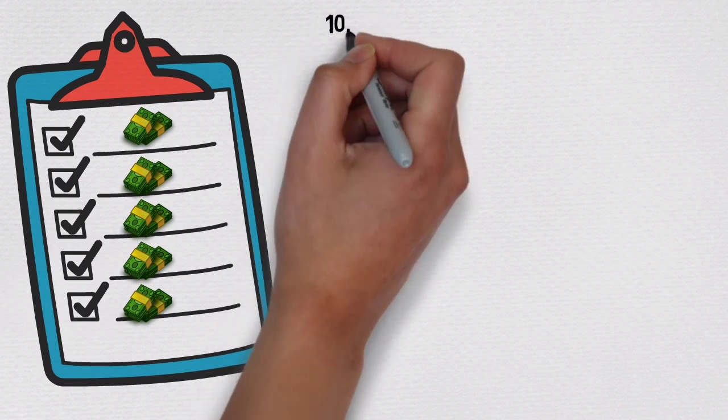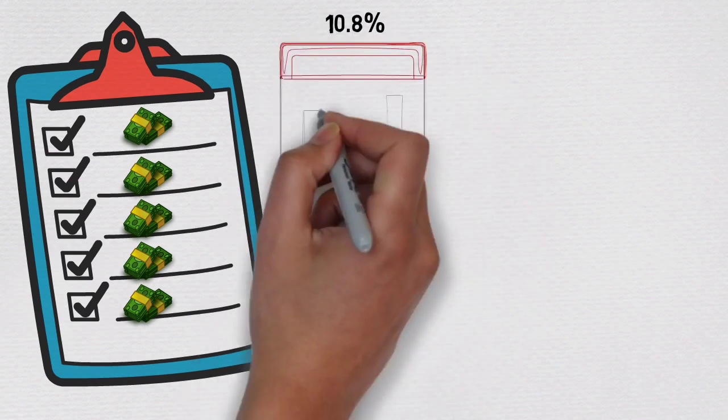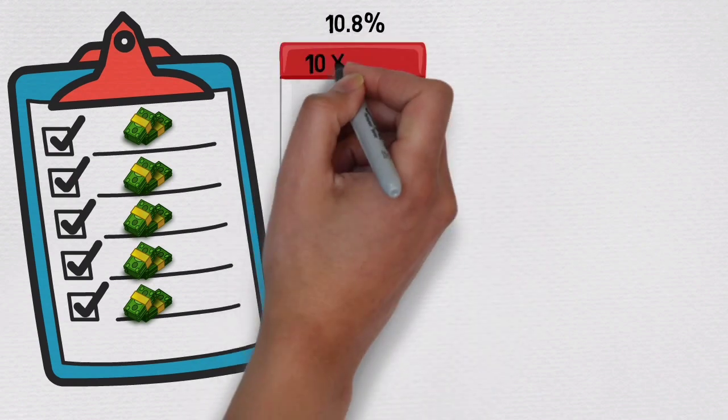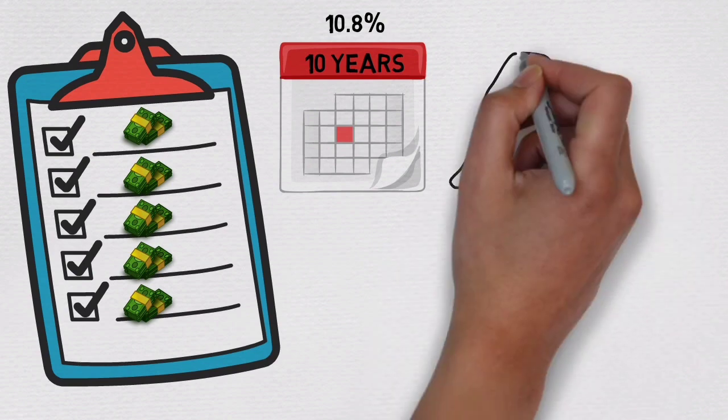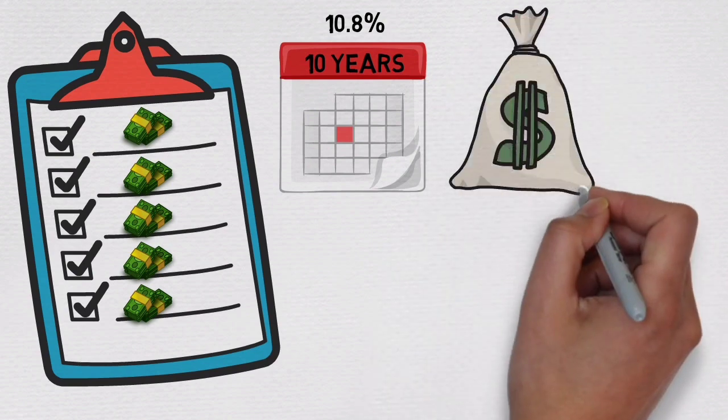Also, REITs have annual return of investment of 10.8% for the past 10 years. Everything we talked about might indicate a lucrative way to make passive income. However,